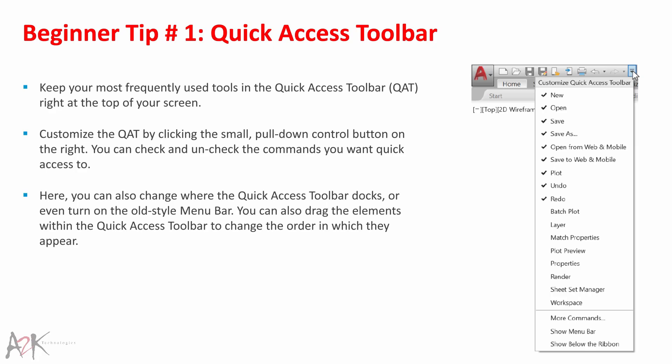Beginner Tip 1 – Quick Access Toolbar. Keep your most frequently used tools in the Quick Access Toolbar (QAT) right at the top of your screen. Customise the QAT by clicking the small pull-down control button on the right. You can check and uncheck the commands you want quick access to, change where the QAT docks, or even turn on the old-style menu bar. You can also drag elements within the QAT to change their order.